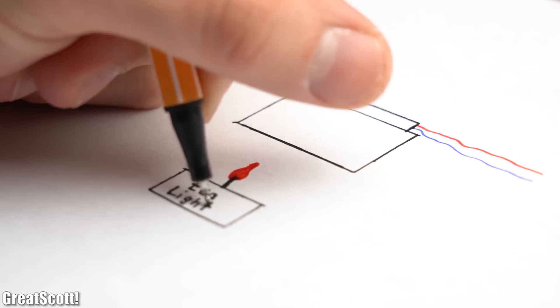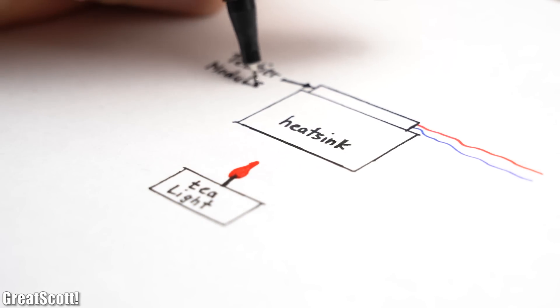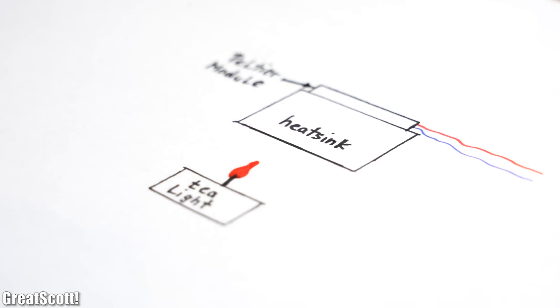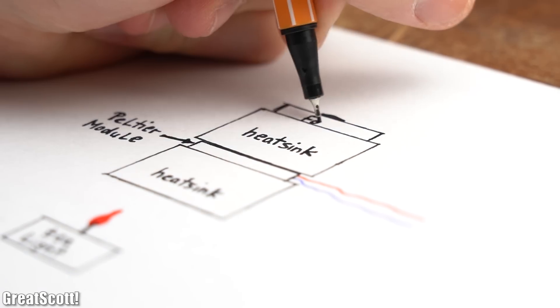The shown system uses a tea light to heat up a heatsink which is attached to one side of a Peltier module. The other side of the module is stuck to another heatsink onto which a fan is placed in order to keep it cool.